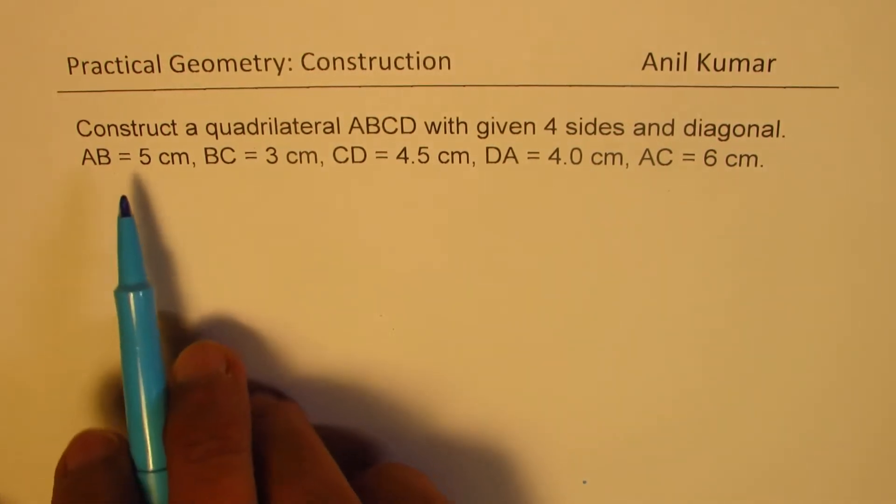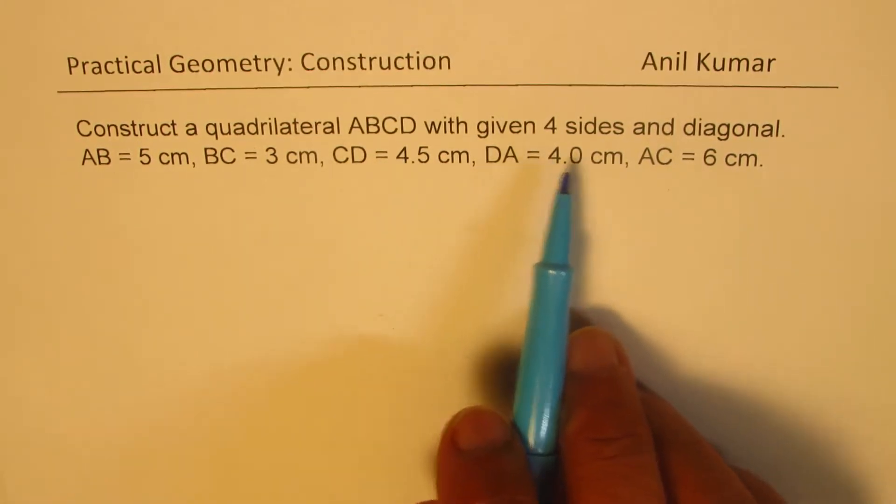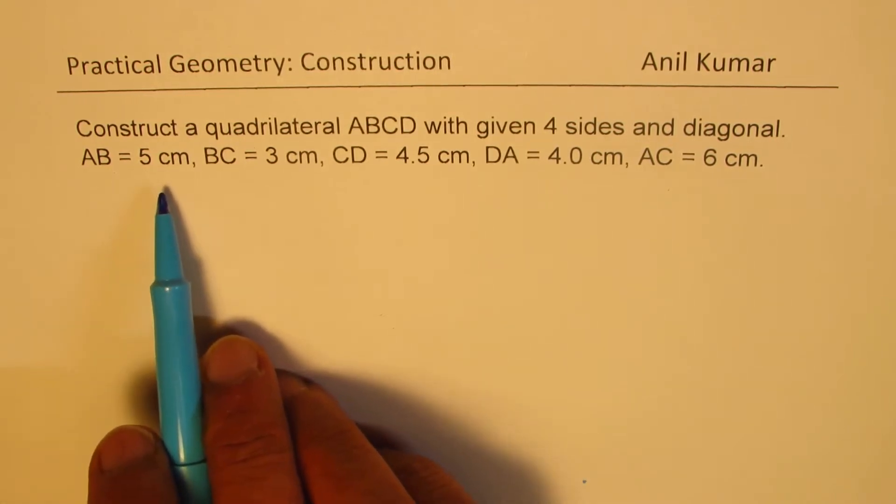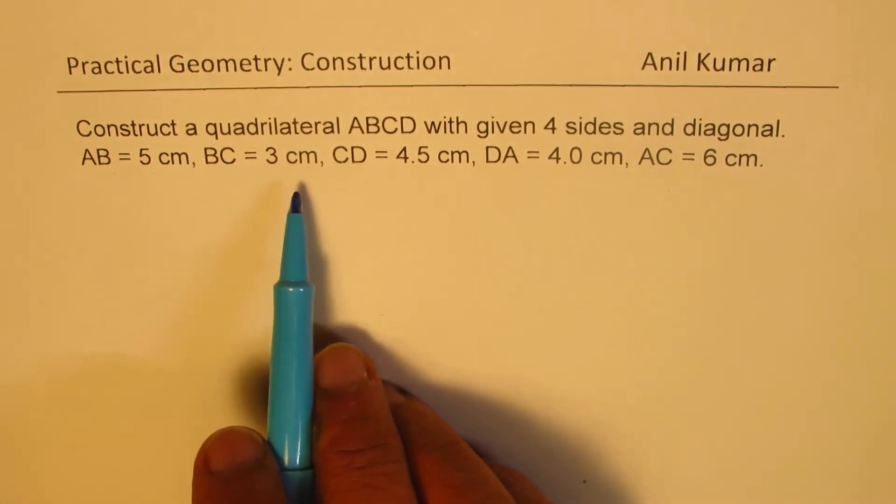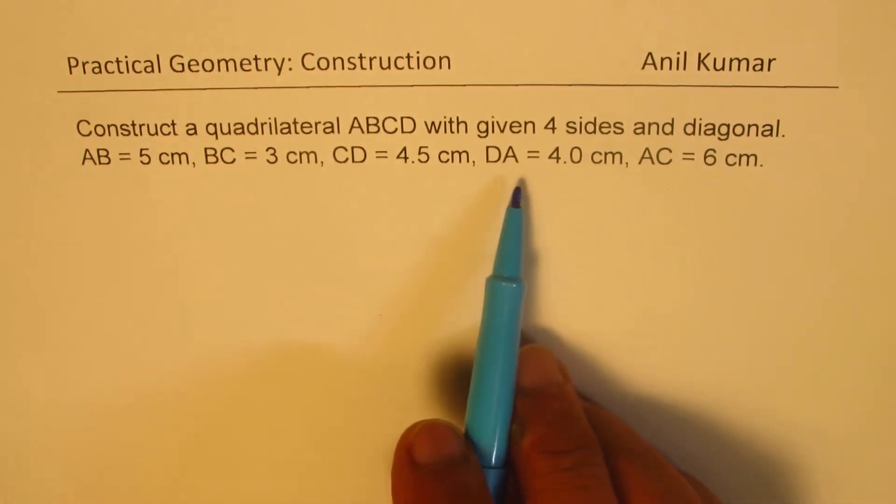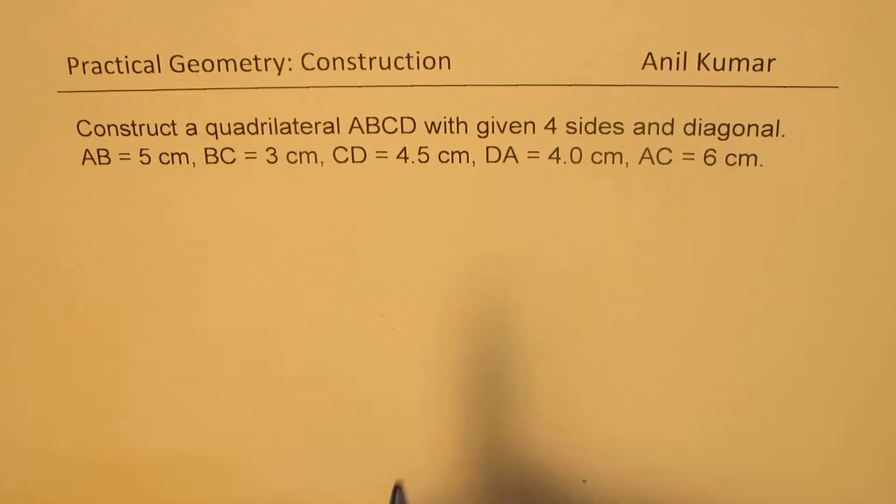The question is construct a quadrilateral ABCD with given four sides and diagonal: AB equals 5 centimeters, BC is 3 centimeters, CD is 4.5 centimeters, DA is 4 centimeters, and AC equals 6 centimeters. You can always pause the video and then look into my suggestions.